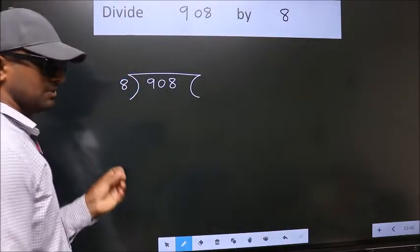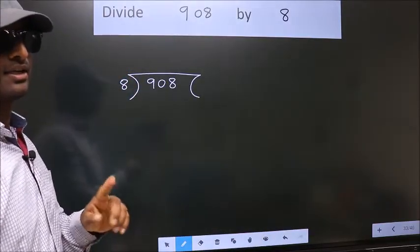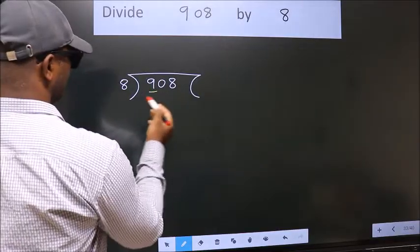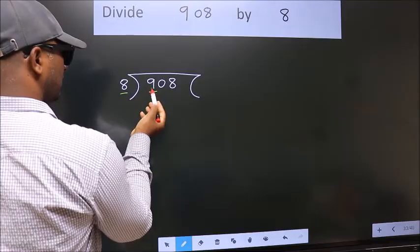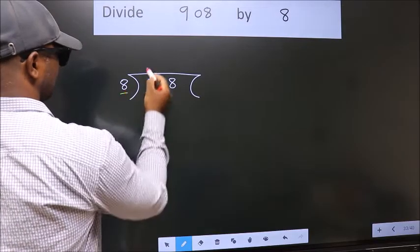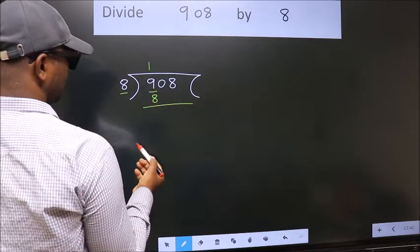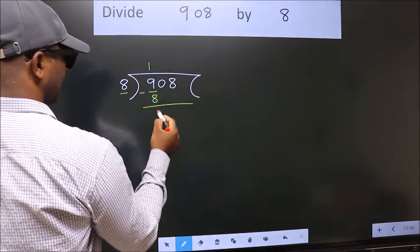This is your step 1. Next, here we have 9, here 8. A number close to 9 in 8 table is 8 once 8. Now, we should subtract. We get 1.